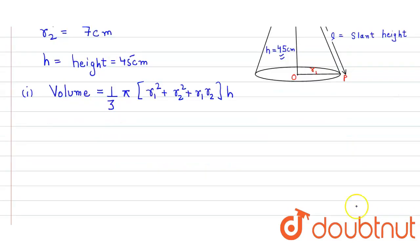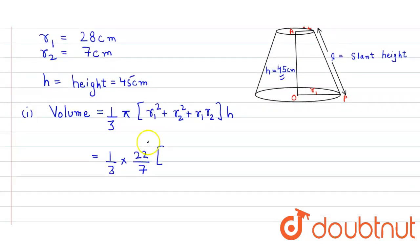So now we just simply replace all these values. Here it is 1/3 × 22/7 × 7 × [28² + 7² + 28 × 7] × height is 45.